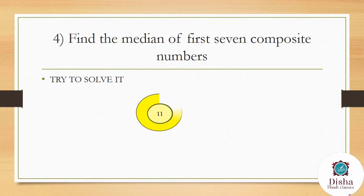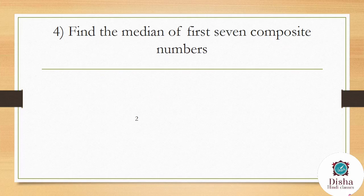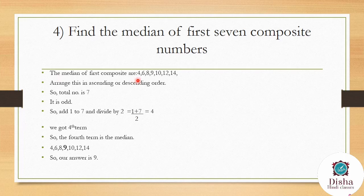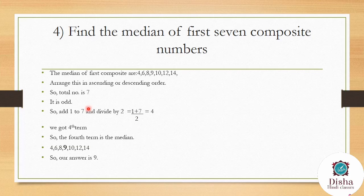Find the median of the first seven composite numbers. The first seven composite numbers are 4, 6, 8, 9, 10, 12, 14. Arranged in ascending order, the total count is 7 (odd), so median = (7+1)/2 = 4th term. The 4th term in the ordered list is 9, so the median is 9.